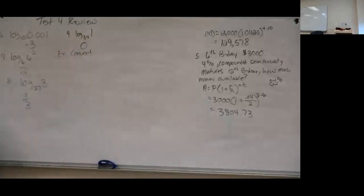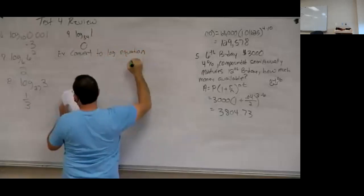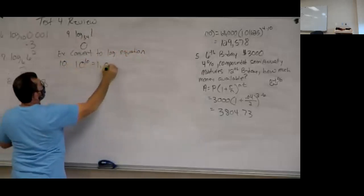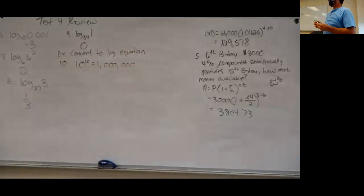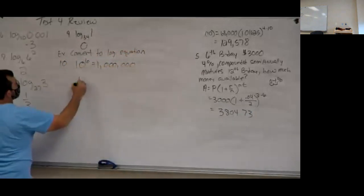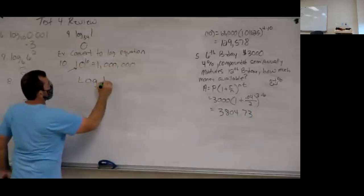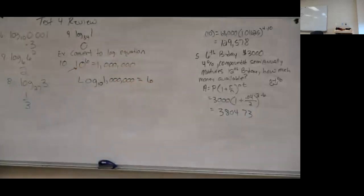Number 10 asks us to convert to a logarithmic equation: 10 to the 6 equals 1,000,000. Write log first. The base of the logarithm is the same as the base of the exponent, so this is log base 10. The result is 1,000,000, which goes next. That equals the exponent of 6. So: log base 10 of 1,000,000 equals 6.